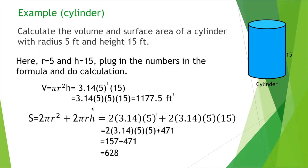For surface area, top and bottom give 2 pi r squared and the side gives 2 pi r h. Plugging in: 2 times 3.14 times 5 squared, plus 2 times 3.14 times 5 times 15. Using the calculator we get 628 feet squared. Since this is surface area, the unit is feet squared.